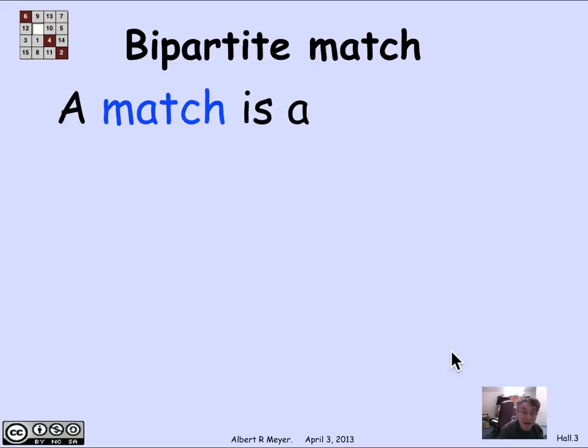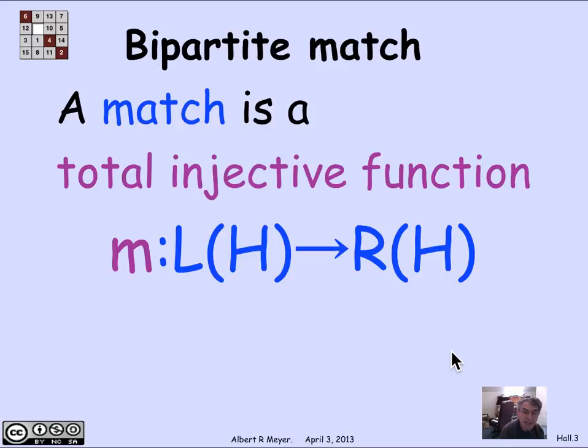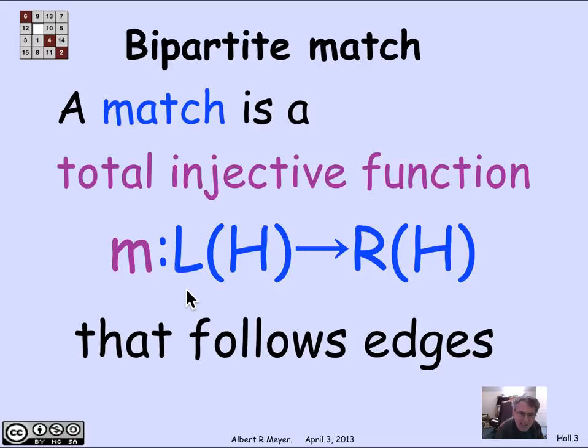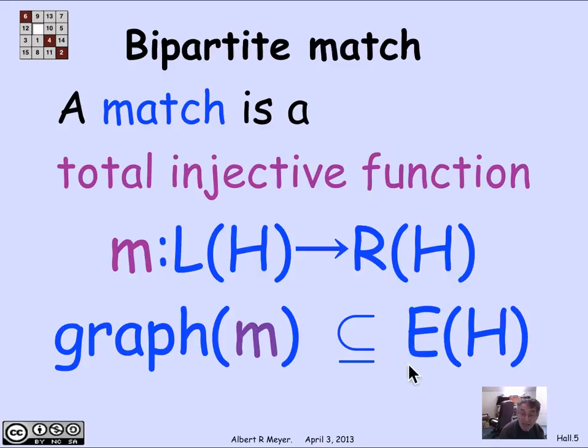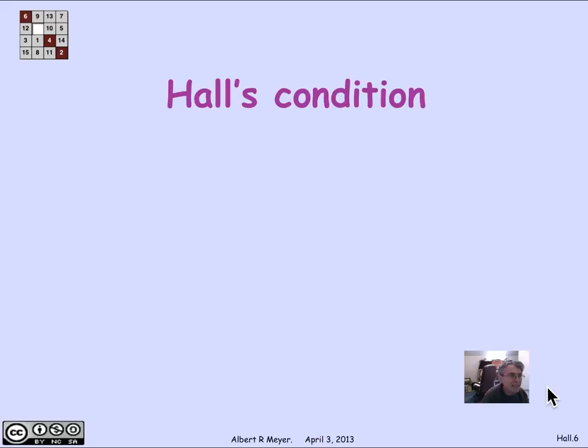We're interested in a matching in a bipartite graph. A match is a total injective function from the left vertices to the right vertices. That means every L vertex, or girl, has a match M(L) on the other side. We need this total injective function M to follow the edges — meaning the edge (L, M(L)) is a legitimate edge of H. Another way to say that is that the graph of this total injective function is a subset of the edges of H.